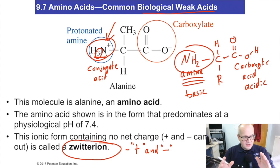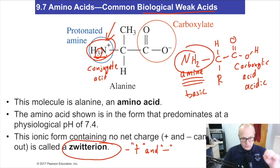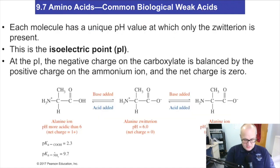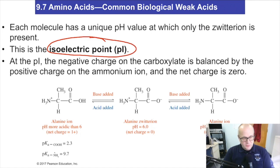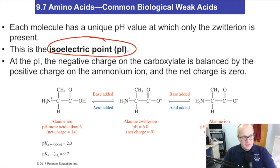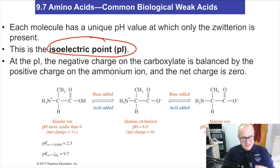There is a certain pH where the zwitterion will form, and every amino acid has one — a specific pH where the zwitterion will form. That specific pH is known as the isoelectric point. The isoelectric point is the specific pH at which the zwitterion forms. It's not a very complicated thing — it's simply the pH at which the zwitterion forms.